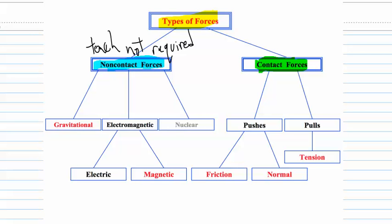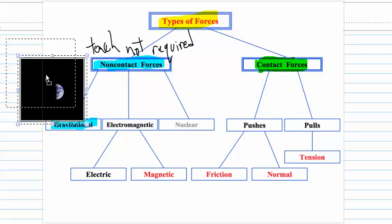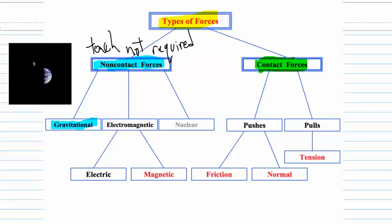One example of a non-contact force is gravity. Gravity affects things from a distance. For example, the Earth and the Moon attract each other even though they're not touching each other.